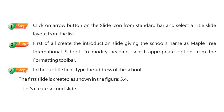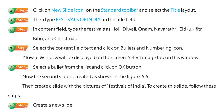Let's create the second slide. Step 4: Click on the new slide icon on the standard toolbar and select the title layout. Step 5: Then type 'Festivals of India' in the title field. Step 6: In the content field, type the festivals.